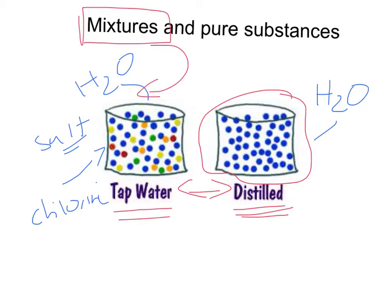Whereas distilled water, where we've taken out all the other things, that's called a pure substance. So pure substance, because there's only one substance, it's pure, there's only one in there.